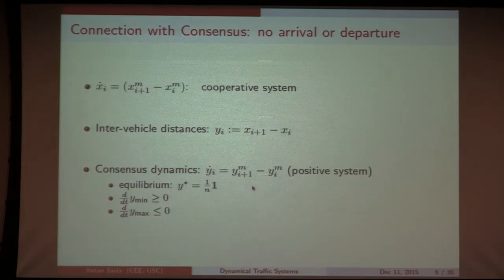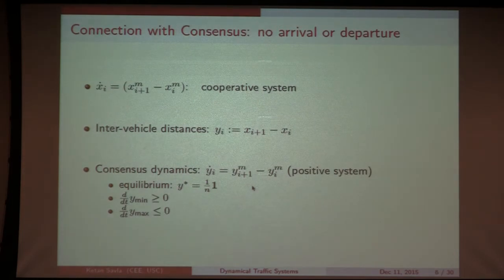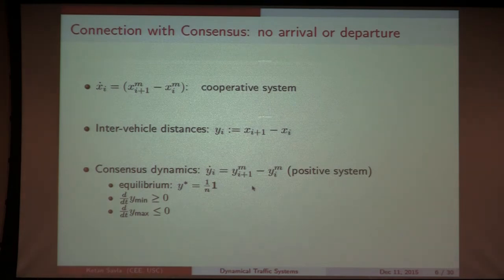This problem appears connected to consensus, string stability, and platooning problems that controls researchers have studied. The key distinction is that all those systems consider closed systems where vehicles do not arrive or depart. In the platooning and string stability literature there is a clear notion of a leader, whereas here there is no leader because cars arrive and depart. All car-following behavior is completely decentralized. If you freeze arrivals and departures, the model we analyze is similar to cooperative systems, which are a special case of monotone systems.